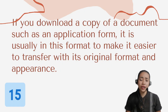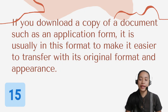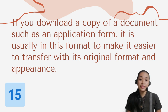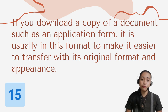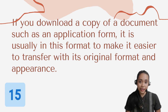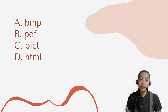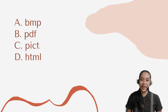Question number 15. If you download a copy of a document such as an application form, it is usually in this format to make it easier to transfer with its original format and appearance. Letter A: BMP. B: PDF. C: PICT. Or letter D: HTML.